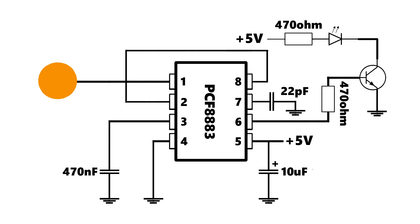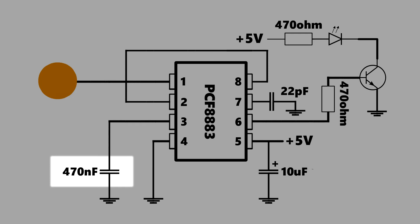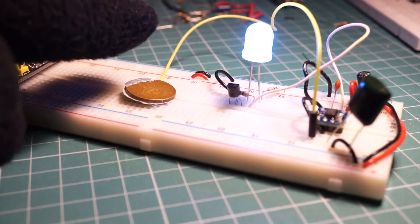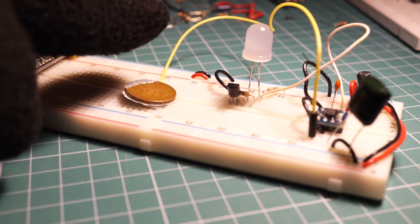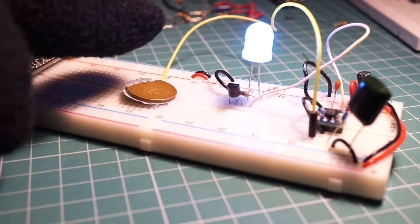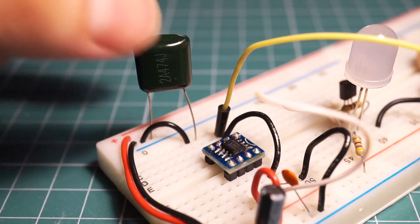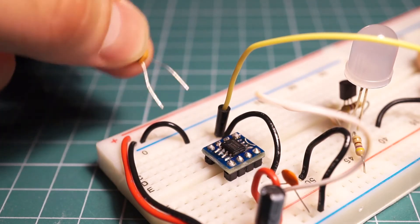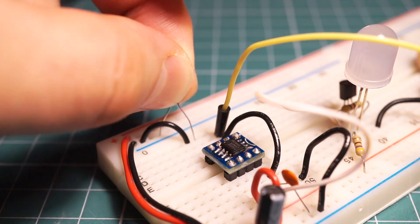Now let's go back to the schematic one more time. It is important to note that the capacitor at pin 3 affects the sensitivity of the chip. Right now my finger is detected even if I have my gloves on. If I need to, I can decrease the sensitivity of the circuit by replacing the capacitor with a much smaller one.